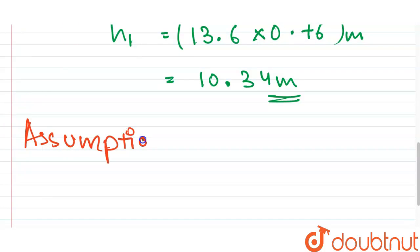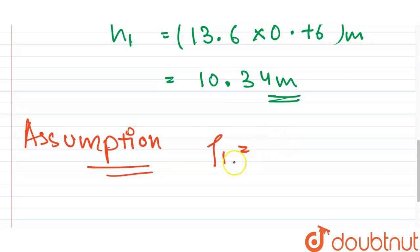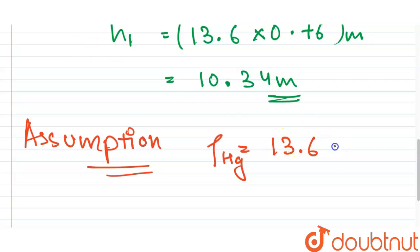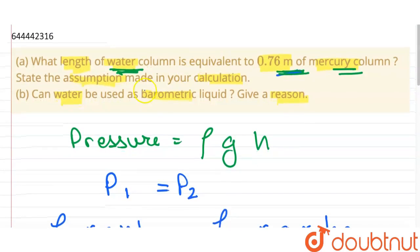The assumption made during this calculation is that the density of mercury is 13.6 times the density of water.